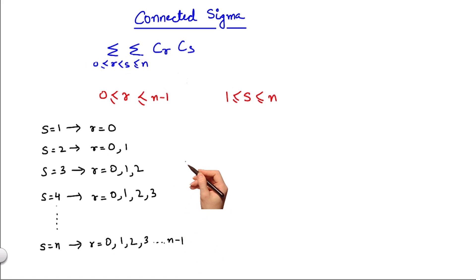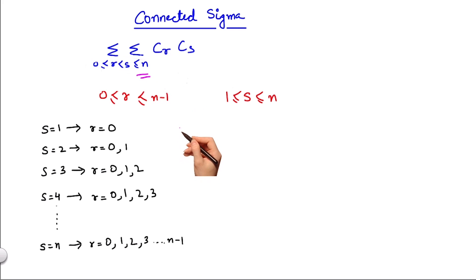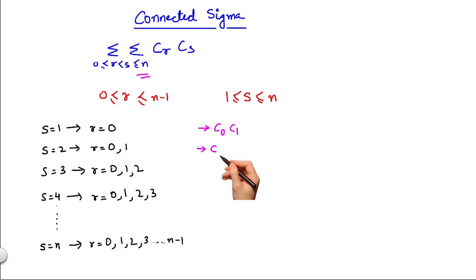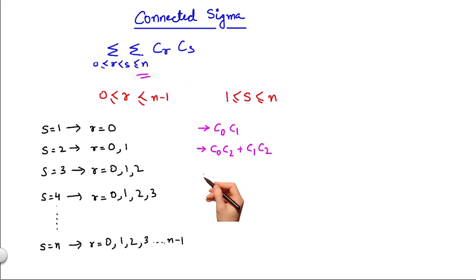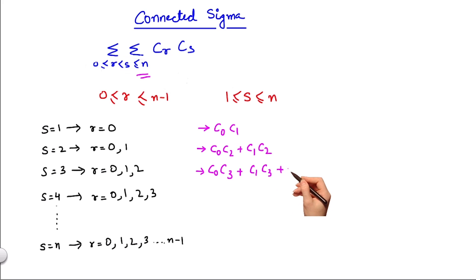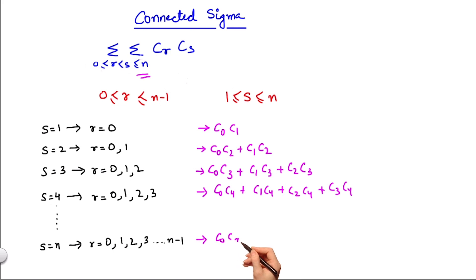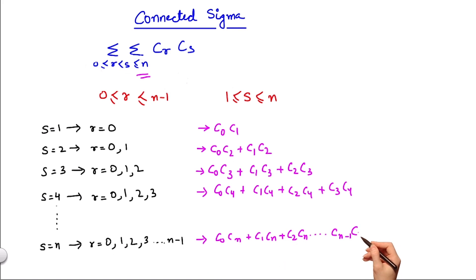Now that we have listed all r and s pairs possible, we can find all the terms present in this double summation CrCs. For r=0, s=1: C0·C1. For r=0, s=2: C0·C2. For r=1, s=2: C1·C2. For s=3: C0·C3, C1·C3, C2·C3. For s=4: C0·C4, C1·C4, C2·C4, C3·C4. For s=n: C0·Cn, C1·Cn, C2·Cn, until Cn-1·Cn.